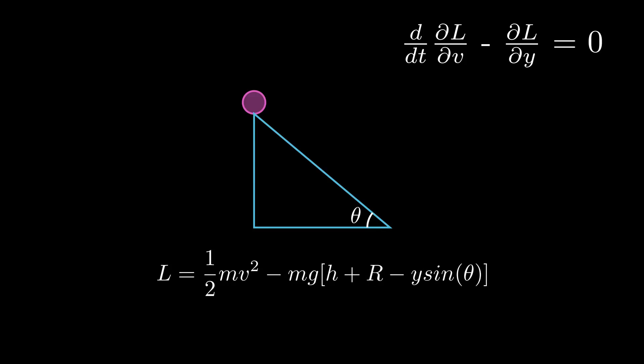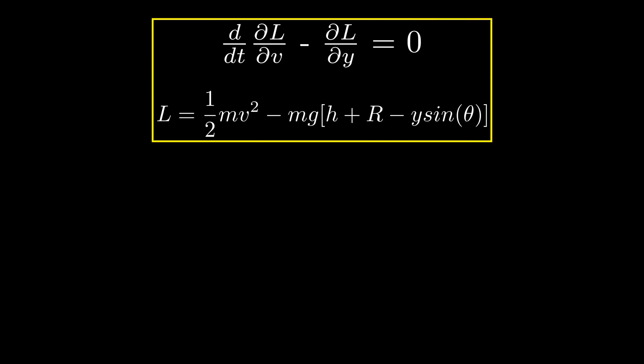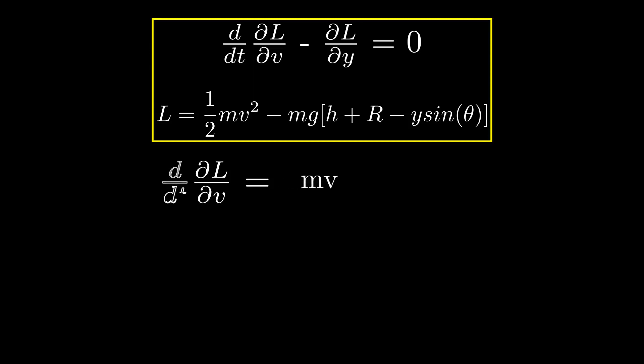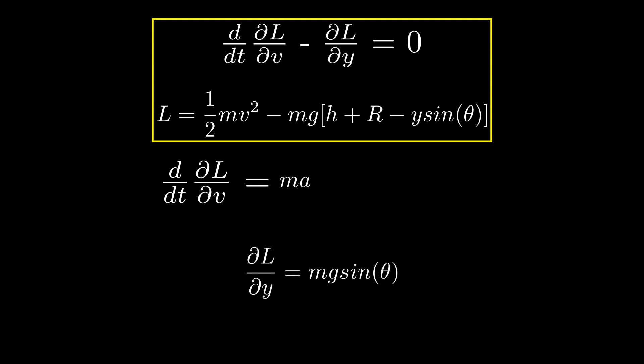Using the Lagrangian and the Euler-Lagrange equation to find the equation of motion: taking the derivative of L with respect to v, the potential energy term cancels out, leaving mass times velocity. Taking the time derivative gives mass times acceleration. Taking the derivative of L with respect to y, the kinetic term cancels out, and the potential term becomes mass times g times sin theta — since the constants h and r vanish when differentiated. Substituting into the Euler-Lagrange equation gives: mass times acceleration minus mg sin theta equals zero.